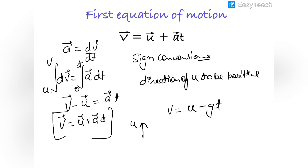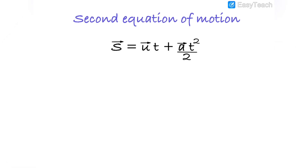Whenever applying the first equation of motion, always assume the direction of initial velocity u as positive, and quantities in the opposite direction are taken as negative. If a ball is dropped (u = 0), then we can assume the direction of acceleration as positive, so the downward direction becomes positive and v = gt.